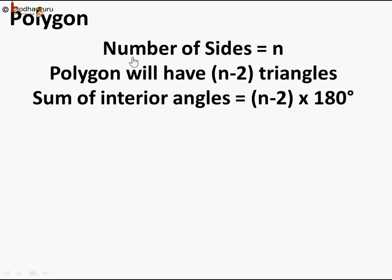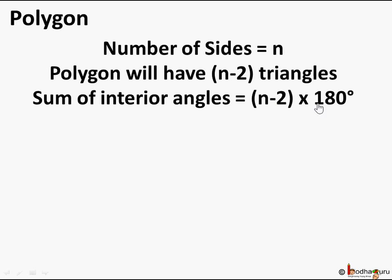So for a generic polygon with n sides, if we draw diagonals from a given vertex it will divide the polygon into n minus two triangles. The sum of interior angles will be (n − 2) × 180 degrees — 180 degrees because that is the sum of interior angles of one triangle, and a polygon with n sides has n minus two triangles.